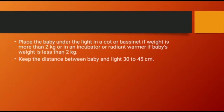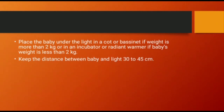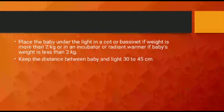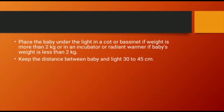Place the baby under the light in a cot or bassinet if weight is more than 2 kg, or in an incubator or radiant warmer if the baby's weight is less than 2 kg. Keep the distance between the baby and the light at 30 to 45 centimeters. Ensure good hydration and nutrition, and make sure the light falls on the baby perpendicularly.